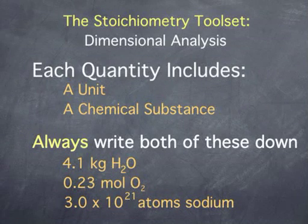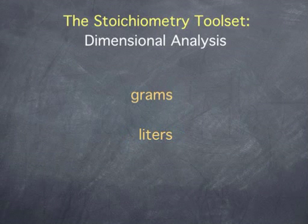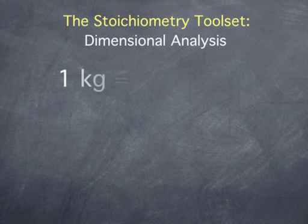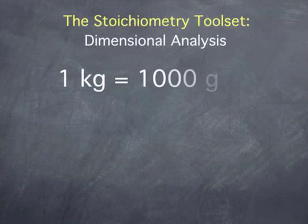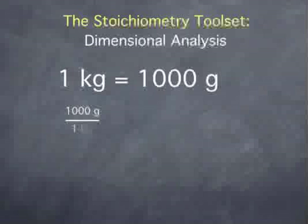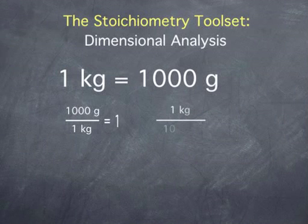Dimensional analysis provides us with the tools needed to convert between different units of measurement. For example, from the definition that one kilogram is equal to 1,000 grams, we can form the ratio 1,000 grams over 1 kilogram equals 1, and its inverse, 1 kilogram over 1,000 grams equals 1.